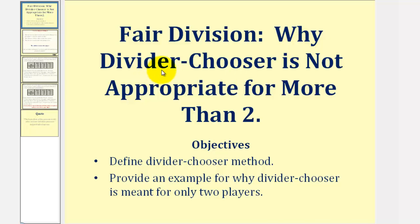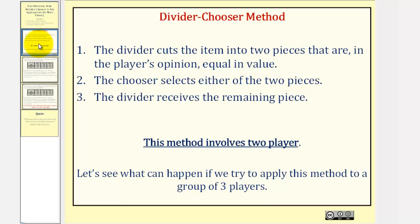We'll consider why the divider-chooser method of fair division is not appropriate for more than two people. To apply the divider-chooser method, we have a divider and a chooser. The divider cuts the item into two pieces that are, in the player's opinion, equal in value. Then in step two, the chooser selects either of the two pieces. And in step three, the divider receives the remaining piece.